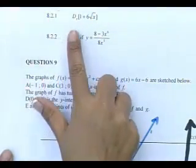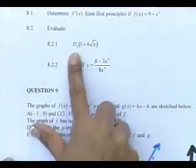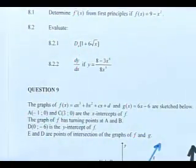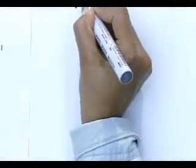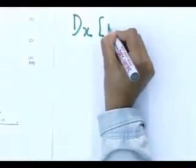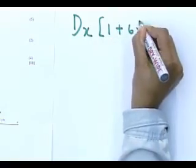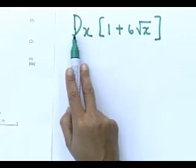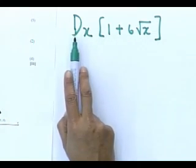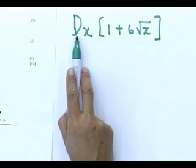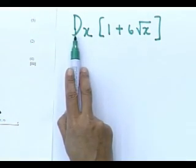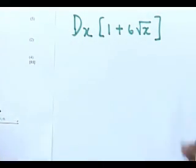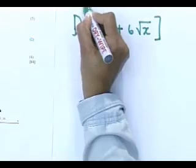I have to evaluate dx of 1 plus 6 root x. Look at that sum, 8.2.1. It says I have to find dx of 1 plus 6 root x. Do you see the word first principles? No, it just says evaluate.